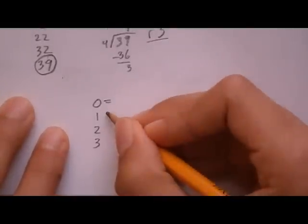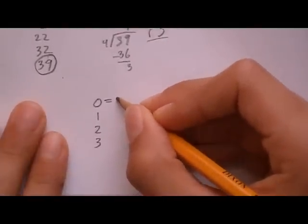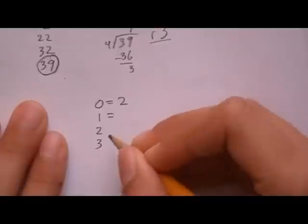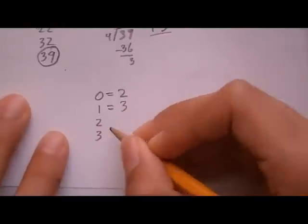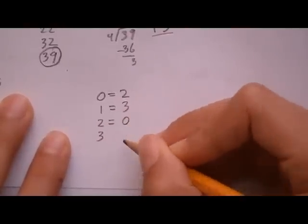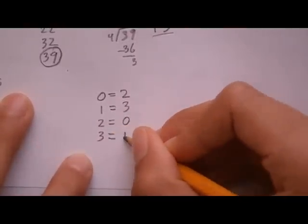So if your remainder was 0, just remember this. Your number you would want is 2. If your remainder was 1, the number you would want is 3. If your remainder was 2, it would be 0. If your remainder was 3, it would be 1.